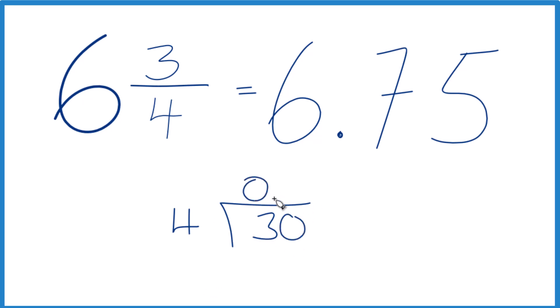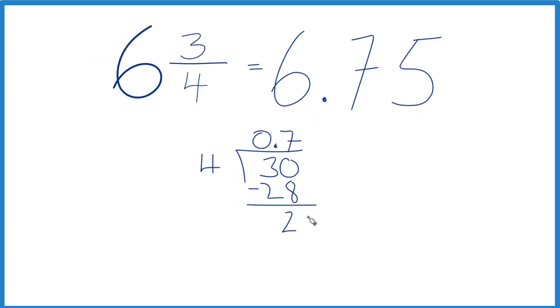Seven times four, that's 28. Subtract, we get two. Let's call that 20 and move over one. Five times four, that equals 20. Subtract, no remainder.